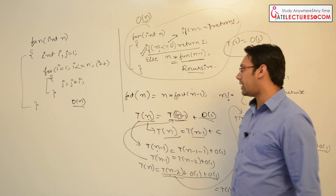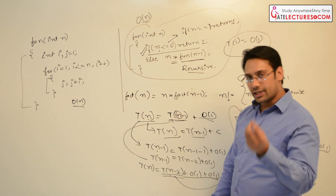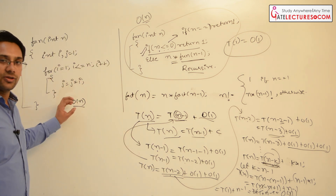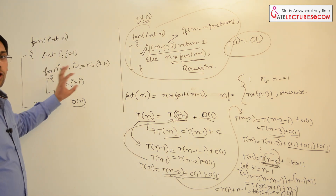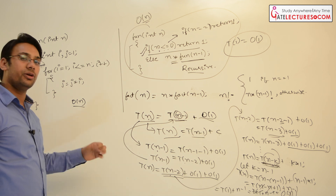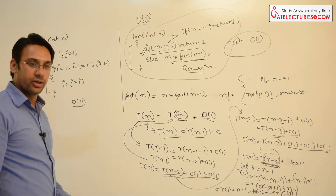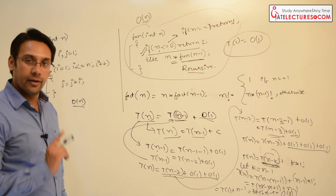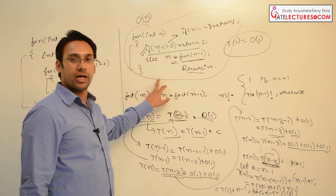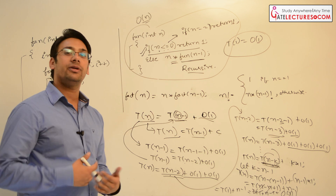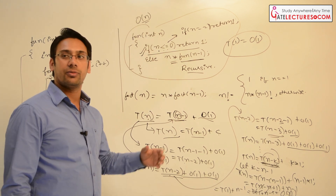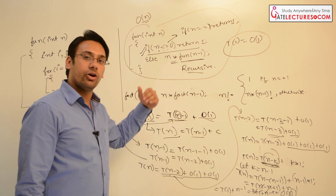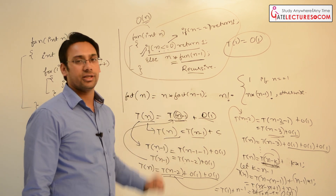It was a very simple example. For a non-recursive program we can easily identify how many times a loop executes and find the time complexity accordingly. But for a recursive program, we don't know how many times statements will be executed — it depends on the number of recursive calls. We identify the number of recursive calls and use that to find the time complexity.